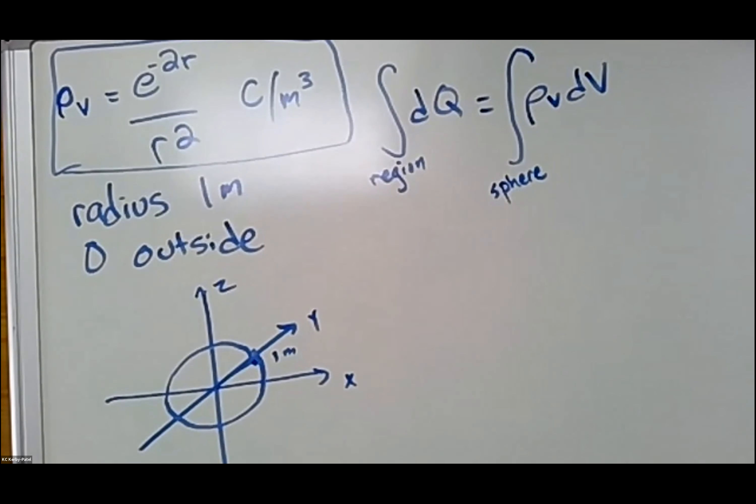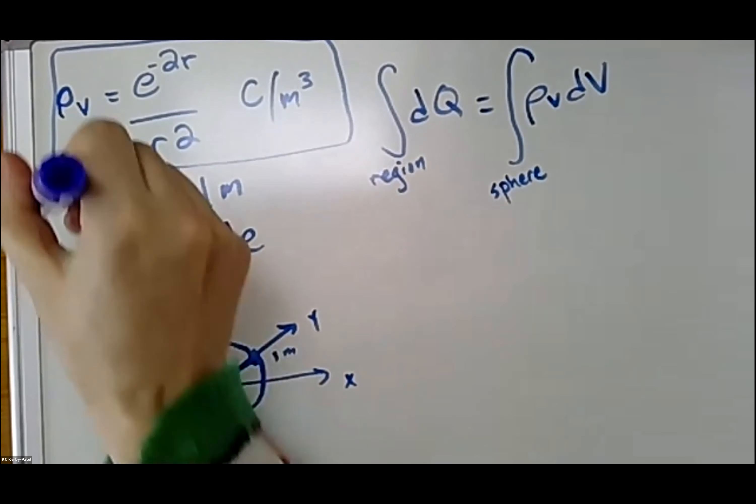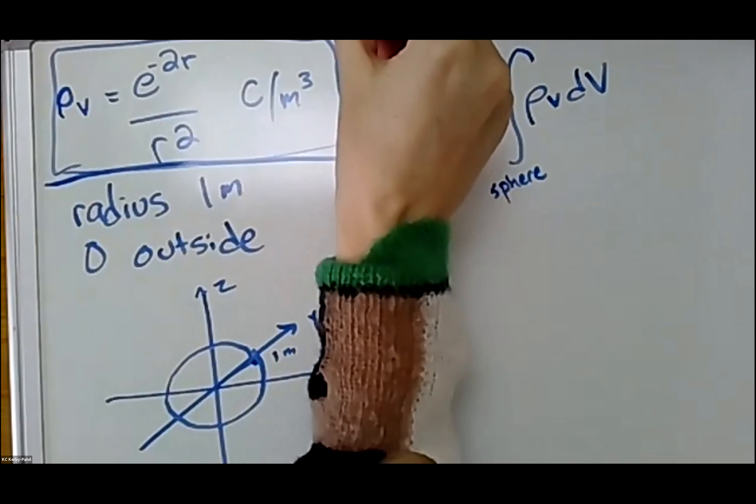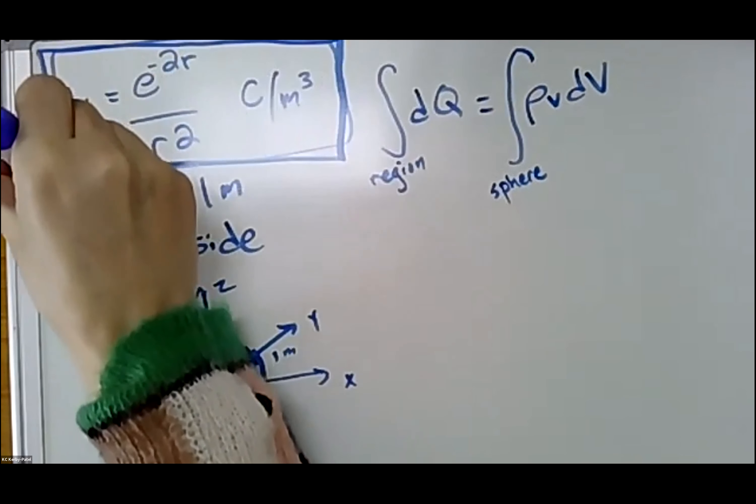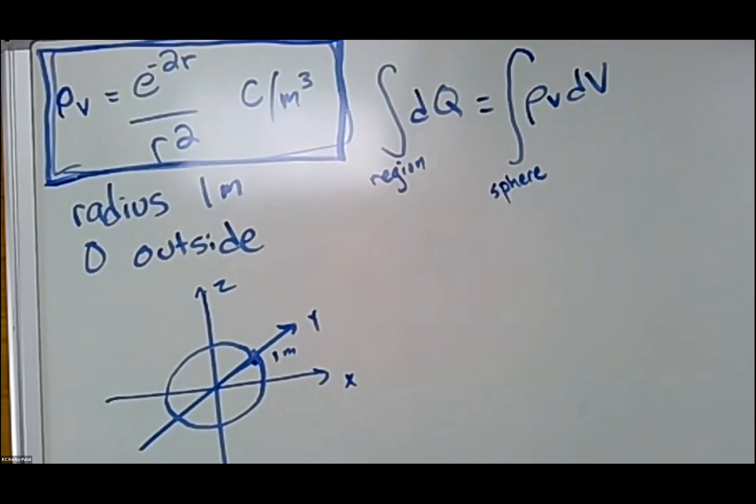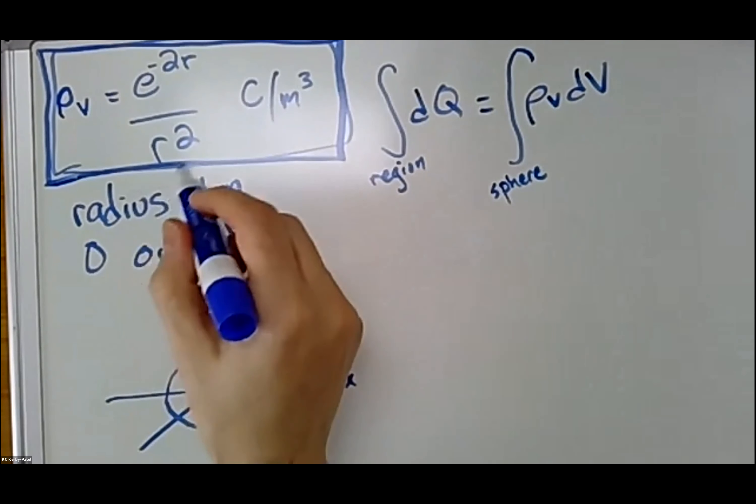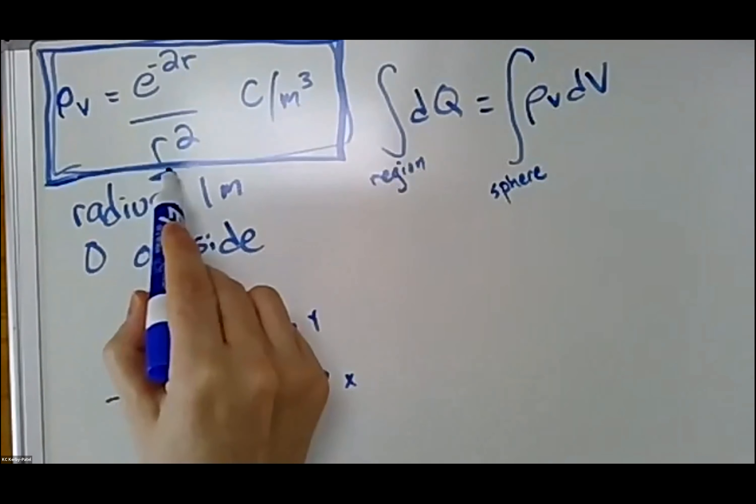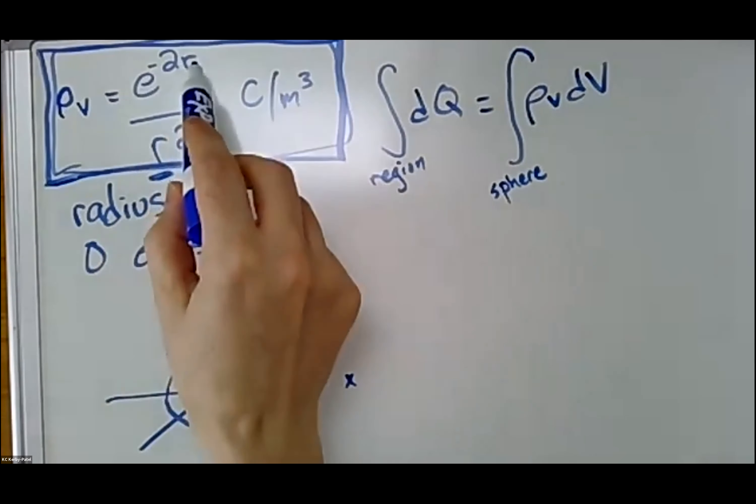To add more information, we can start substituting in the things that we know. Here, up here in this square, I have the value of that volume charge distribution, so I can put that in. But what is dV?